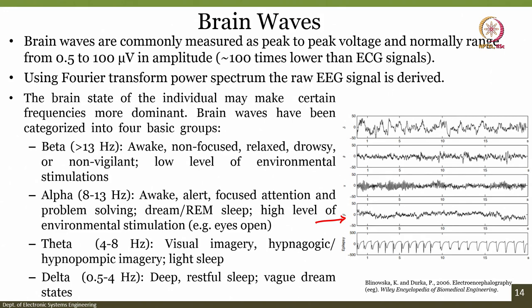One step further is alpha. The alpha frequency is between 8 to 13 Hz and this is for people who are awake, alert, focused, with attention and problem solving. REM sleep or dreaming sleep, high level of environmental stimulation — for example, eyes are open. So if you are really awake and listening to the lecture, yet focused, and if I measure the signals from your brain, it should fall somewhere in the alpha region.